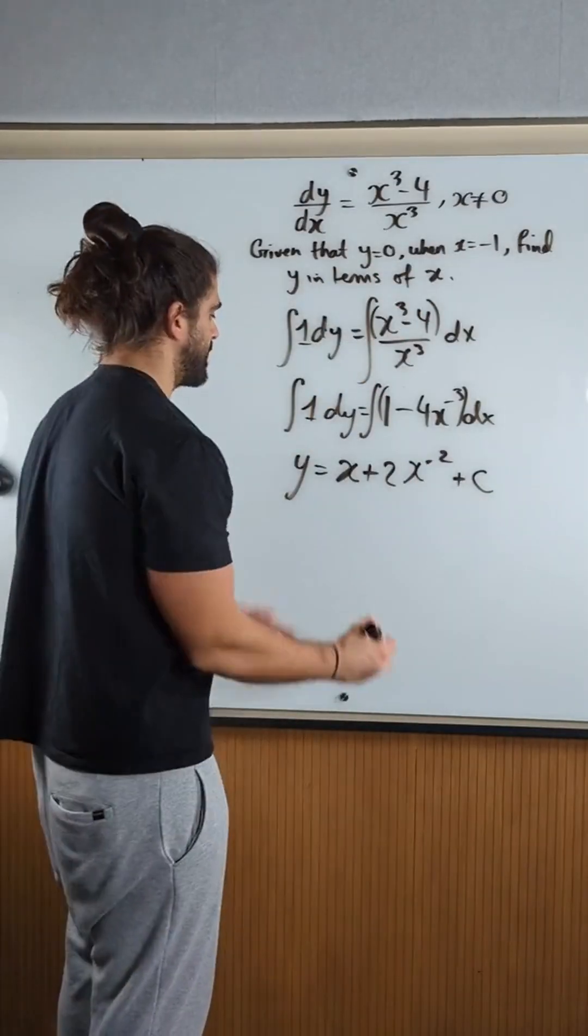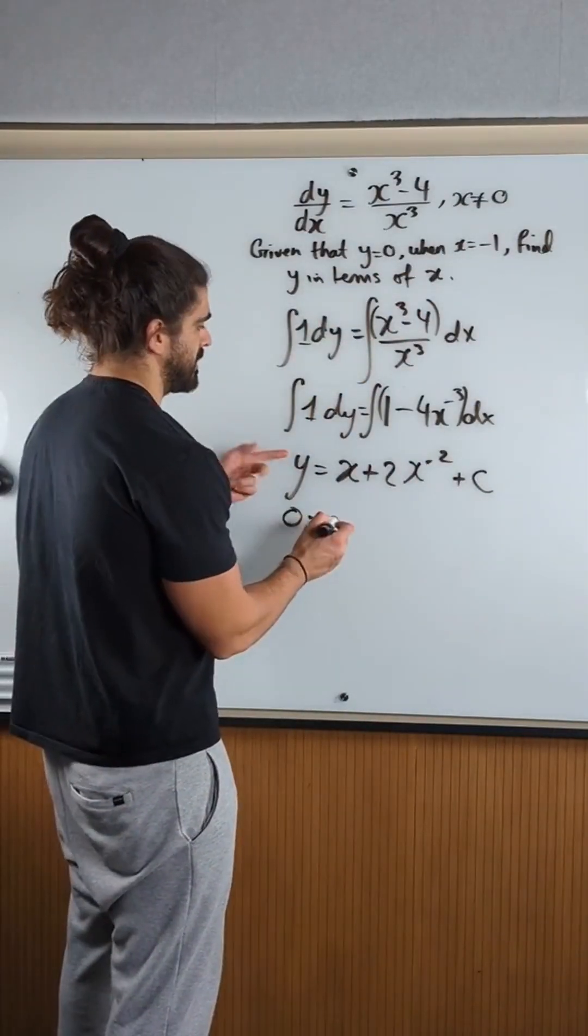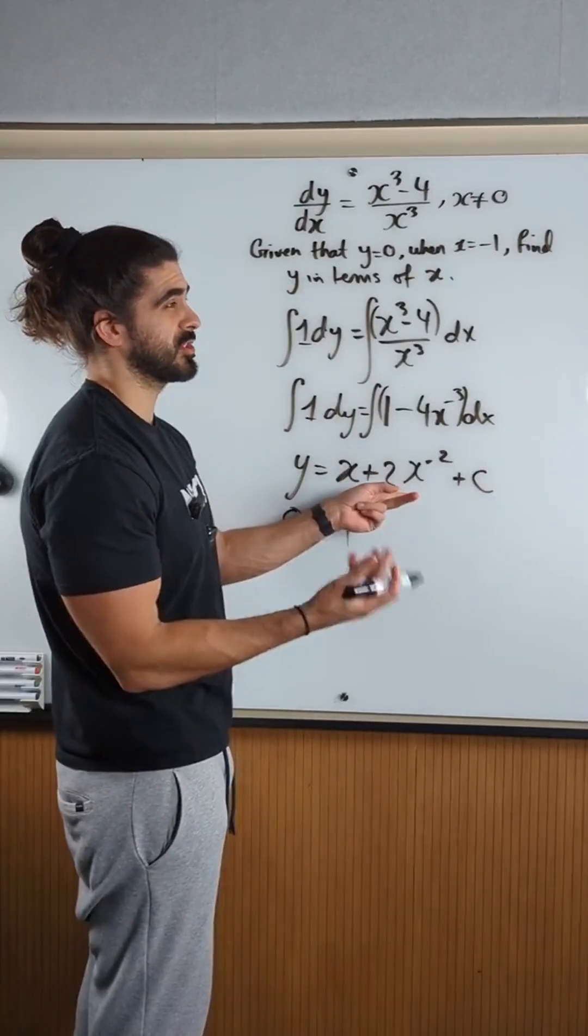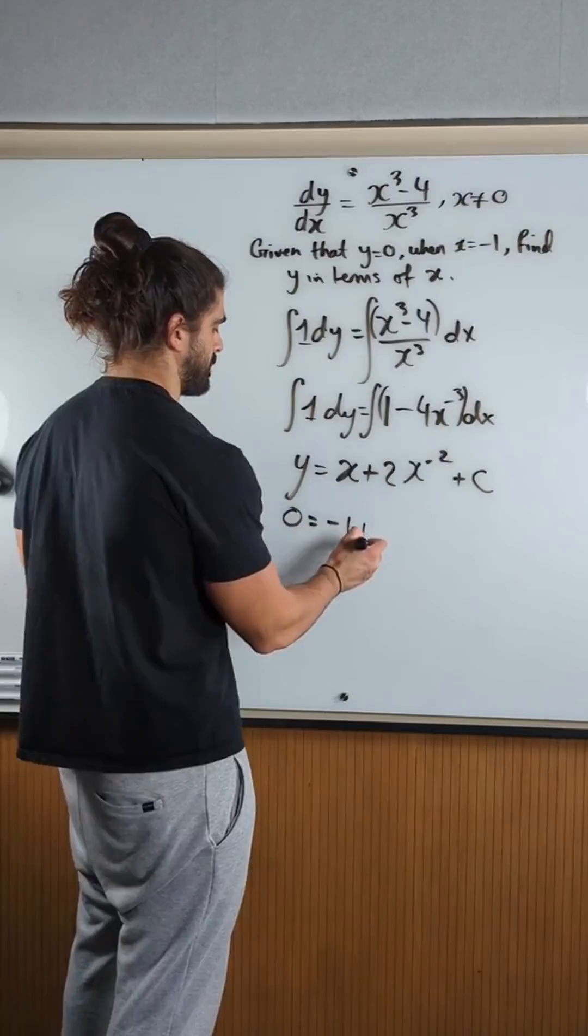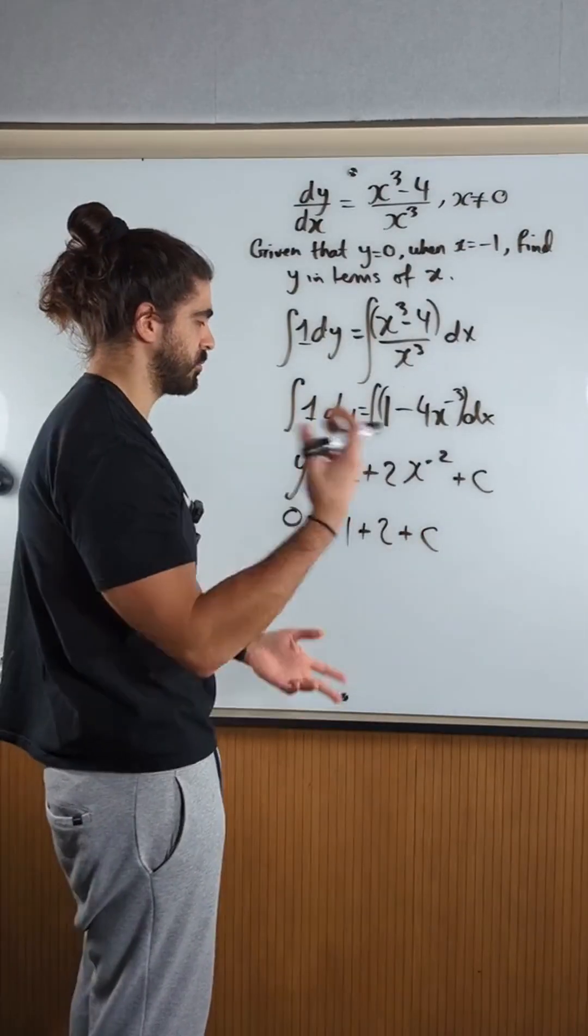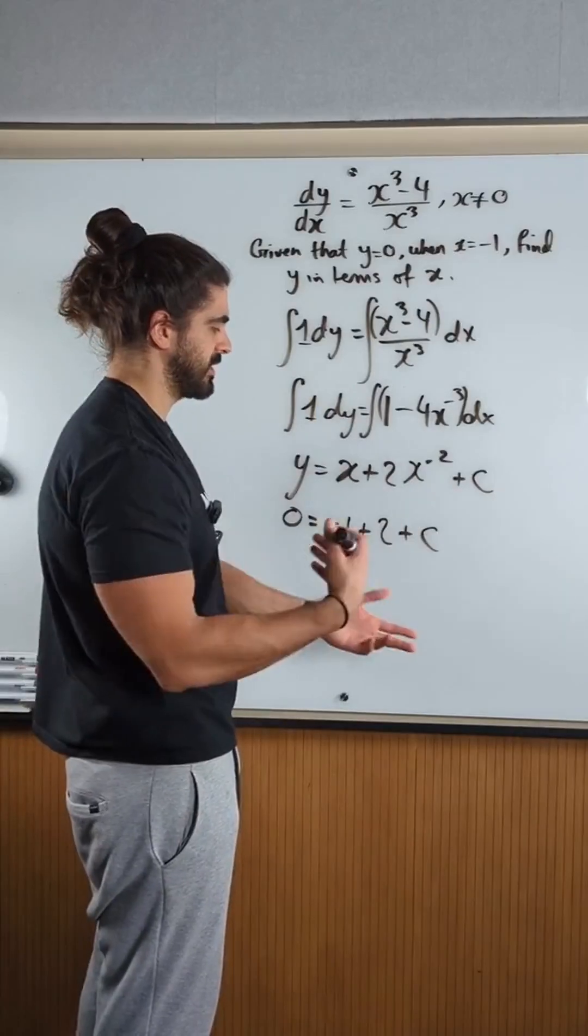When y is 0, x is minus 1, so we get 0 is minus 1. Minus 1 to the power of minus 2 is just 1, so we get plus 2. Minus 1 plus 2 is 1, so c is minus 1.